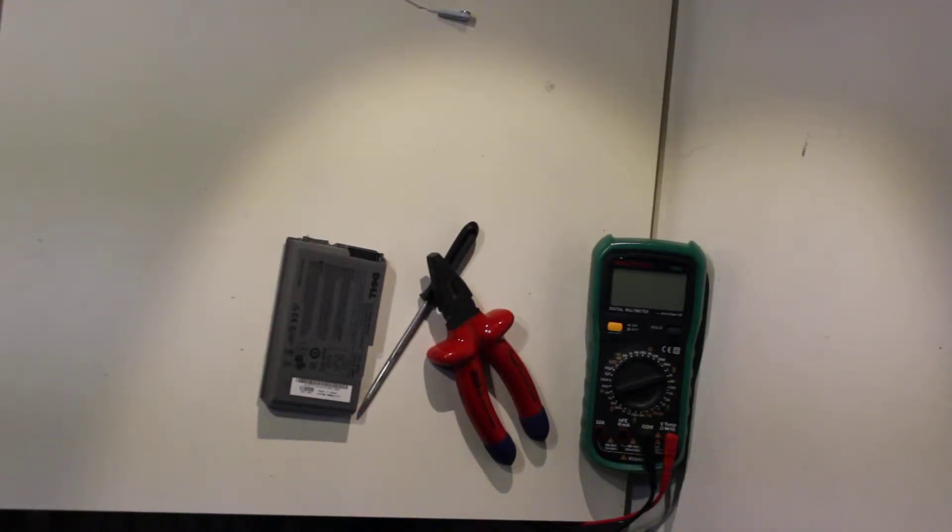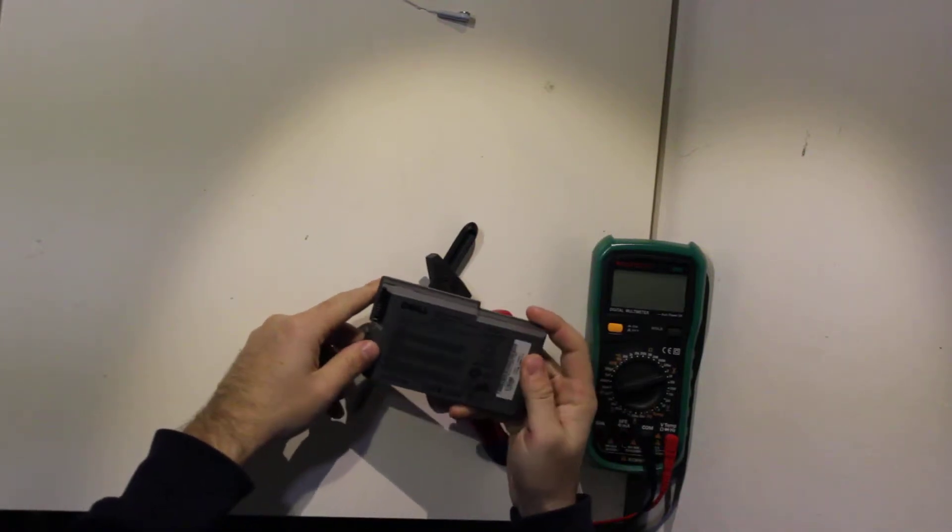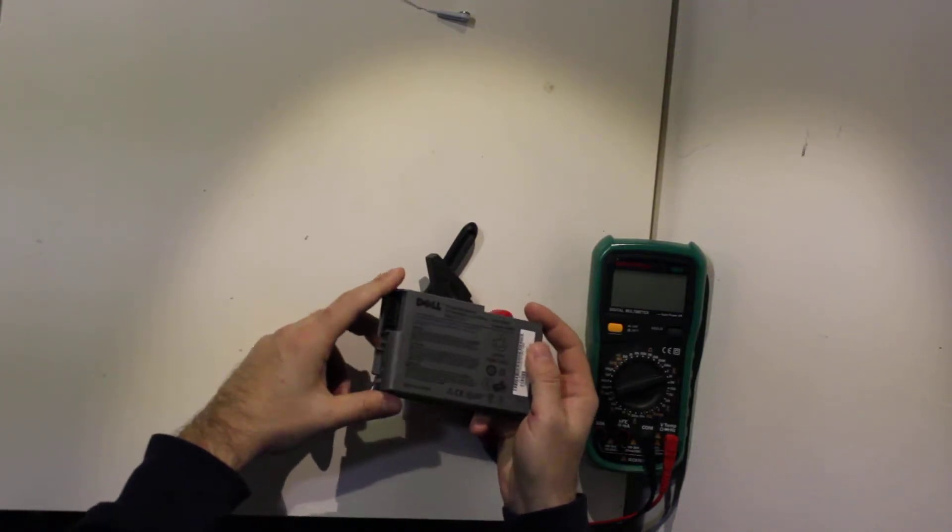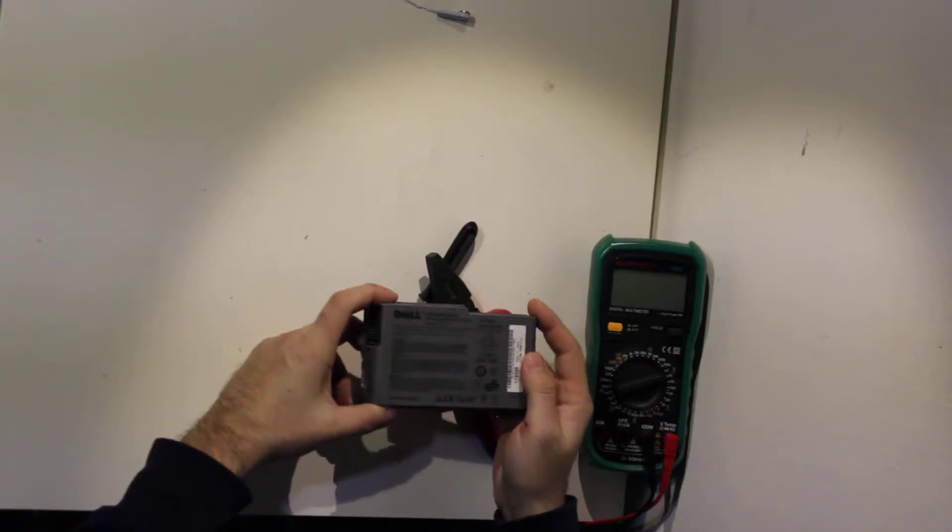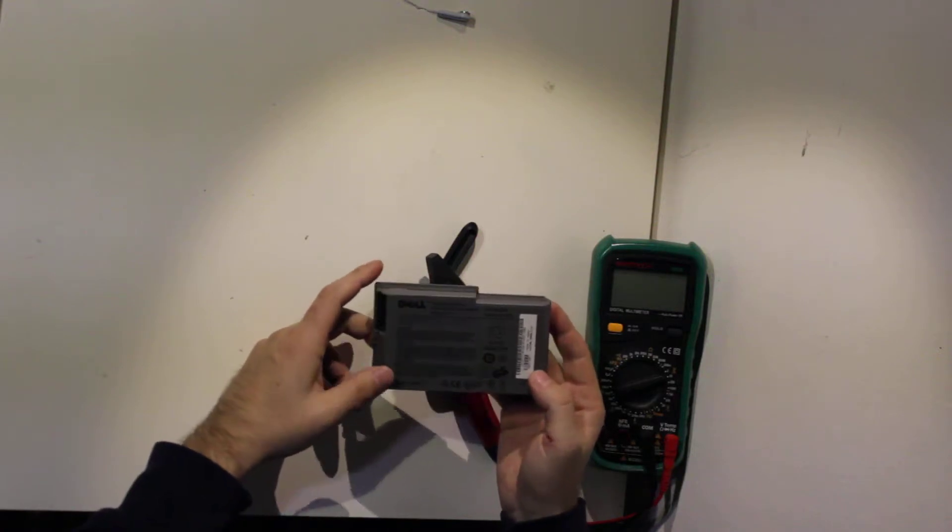Hey guys, you know what time it is—it's teardown time. This time I'm going to tear down a Dell branded battery. It's an original Dell type M9014, for Dell Latitude D500 and D600. The place I took this from already tried to open it, so this one will be easy.